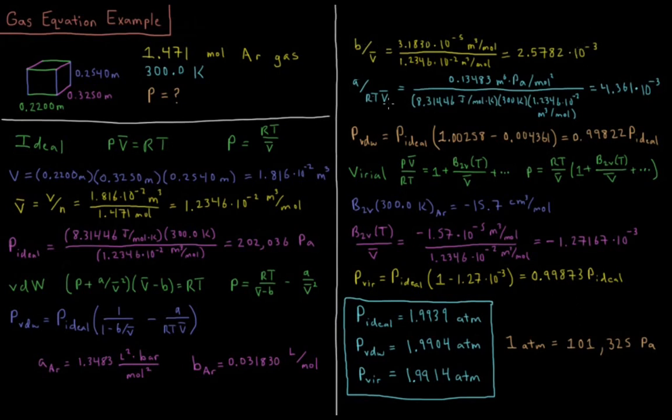A over RT V-bar, once I convert A into pascals and meters cubed, is 0.13483 meters to the 6th pascals per mole squared, over 8.31446 joules per mole Kelvin, 300 Kelvin, 1.2346 times 10 to the minus 2 meters cubed per mole. That gives me 4.361 times 10 to the minus 3rd.